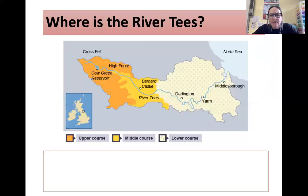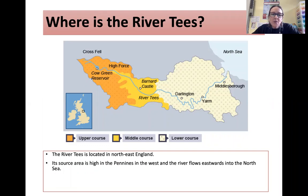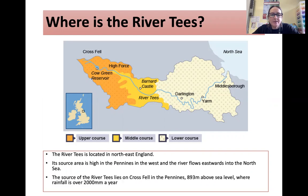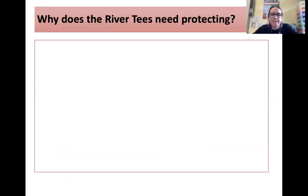So where is the River Tees? It's in the northeastern part of England. Its source is high up in the Pennines in the west, and the river flows eastwards into the North Sea. The source of the River Tees lies on Crossfell in the Pennines, which is 893 metres above sea level, and rainfall here is over 2,000 millimetres a year.